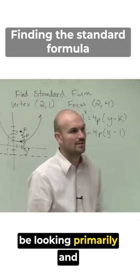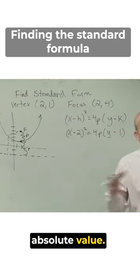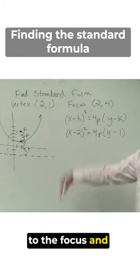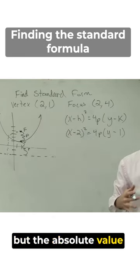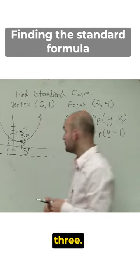But we're just going to be looking primarily at what is this absolute value. Obviously, it's positive to the focus and negative to the directrix. But the absolute value of that is going to be 4.